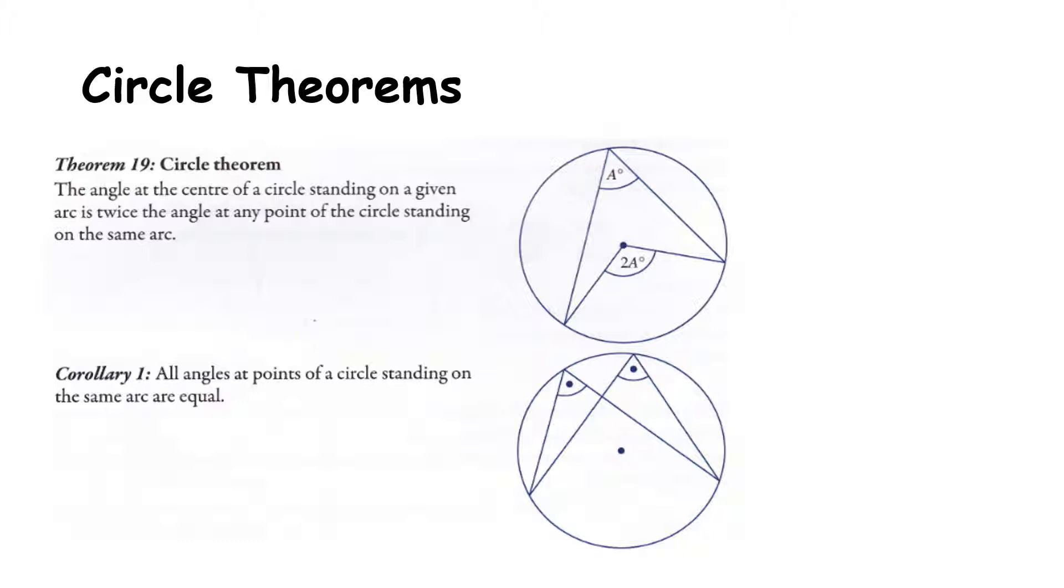The first theorem is Theorem 19, the circle theorem, and it states that the angle at the centre of a circle standing on a given arc is twice the angle at any point of the circle standing on the same arc. Just a bit of revision of our terminologies: where we're talking about arc, we're talking about this piece here, a part of the circumference. Notice how these two angles both start and end at the same point on the circle, and that is important. So no matter what angle we know, we'll be able to work out the other one.